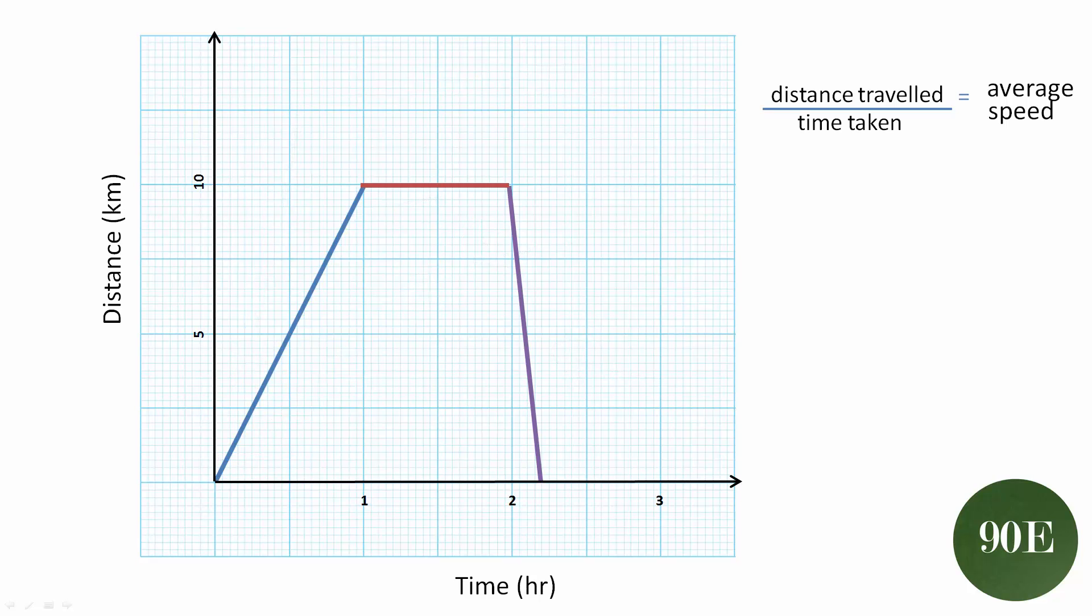One of the other benefits of a distance-time graph is that we can represent an entire journey, which would look something like this. There are three portions or three stages to this journey, and they're represented by the blue line, the red line, and the purple line.